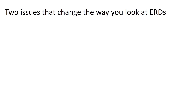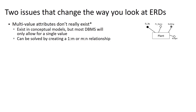These are two issues that are going to fundamentally change the way you look at entity relationship diagrams. First, multi-value attributes don't really exist — it's not a thing we can do in our relational database. They do exist in conceptual models, but generally speaking, we can only have a single value for an attribute. We're going to solve this by creating an additional one-to-many or many-to-many relationship to capture the many values of these attributes.